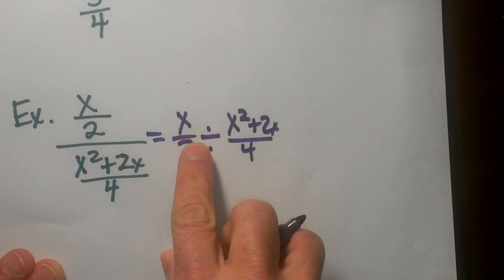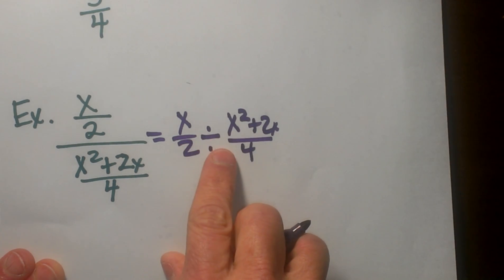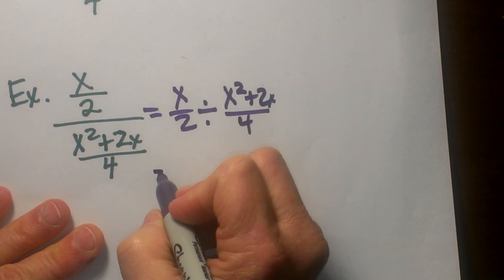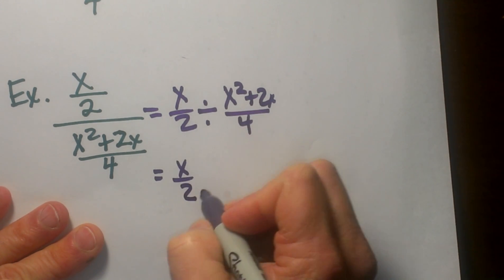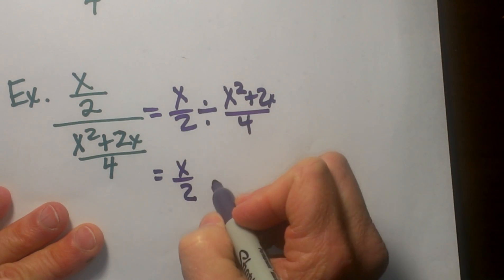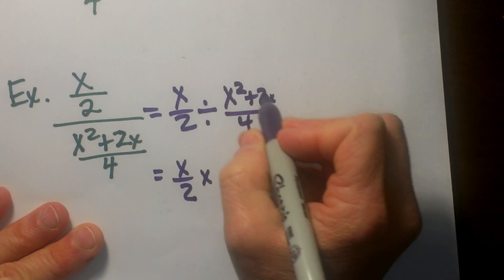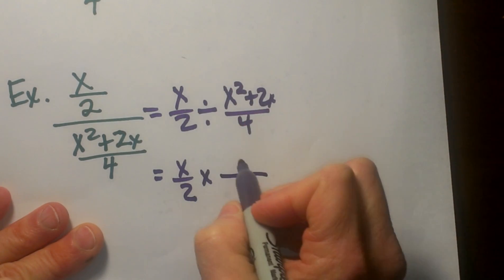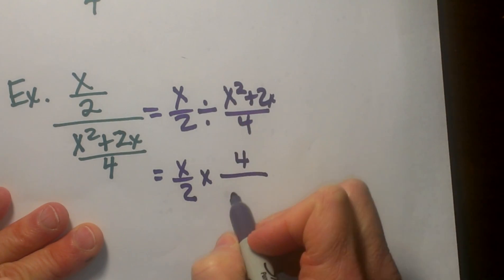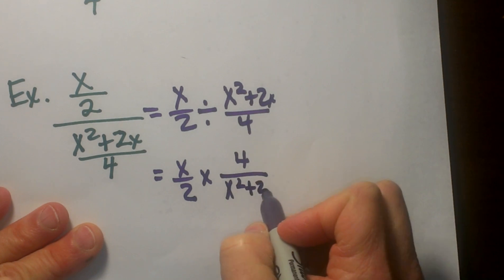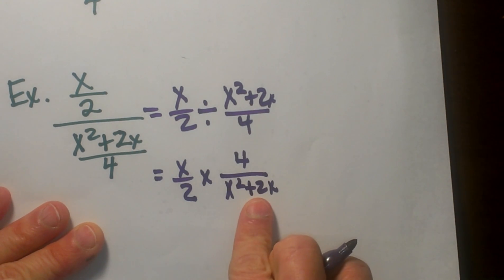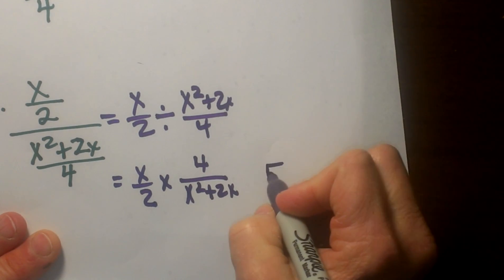Now let us use the keep it, change it, flip it rule. So we are going to keep the first fraction x over two, we are going to change this to multiplication, and we are going to flip or take the reciprocal of the second fraction. Now I need to reduce this. How do I reduce a rational expression? I have to factor it.